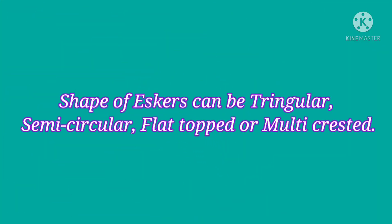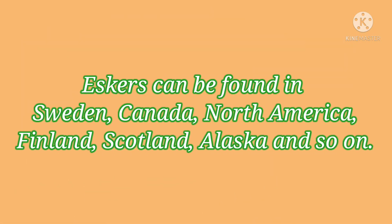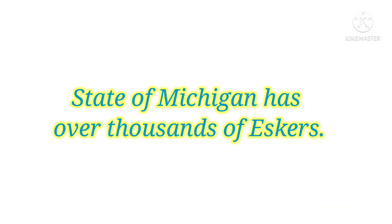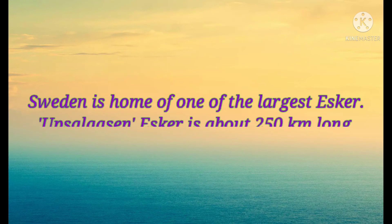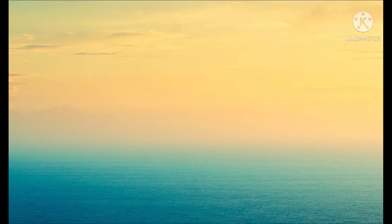The shape of Escar can be triangular, semi-circular, flat-topped, or multi-crested. Escars are common in glaciated regions. They are found in Sweden, Canada, North America, Finland, Scotland, Alaska, and so on. The state of Michigan has over 1,000 Escars. Sweden is home to one of the largest Escars — Uppsala Sen is one of the largest Escars of Sweden, which is about 250 kilometers long.